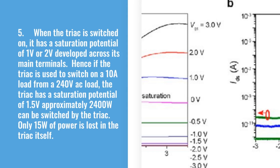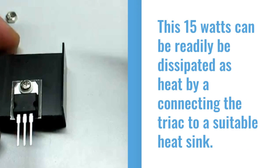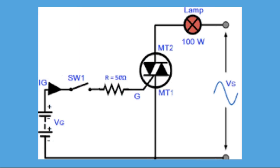Fifth, when the TRIAC is switched on, it has a saturation potential of 1 to 2 volts developed across its main terminals. Hence, if the TRIAC is used to switch on a 10-ampere load from a 240-volt AC supply, with a saturation potential of approximately 1.5 volts, around 2400 watts can be switched by the TRIAC, and only 15 watts of power is lost in the TRIAC itself.